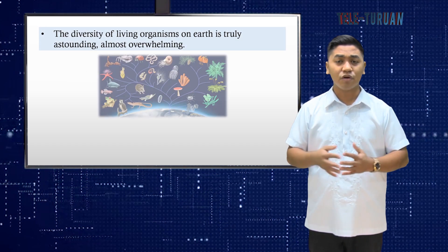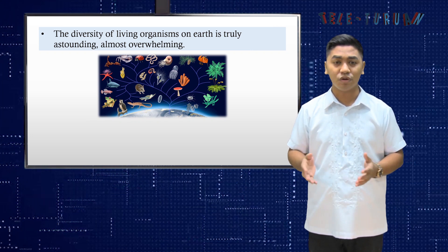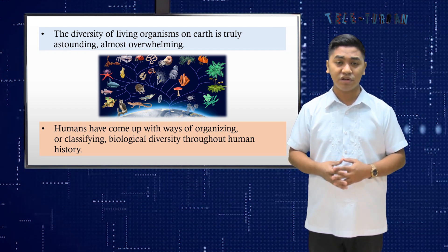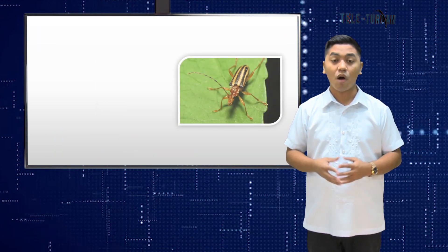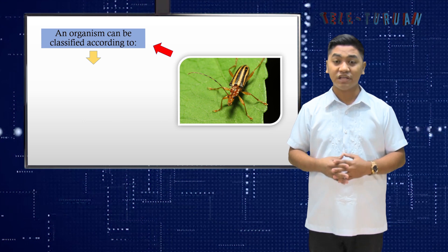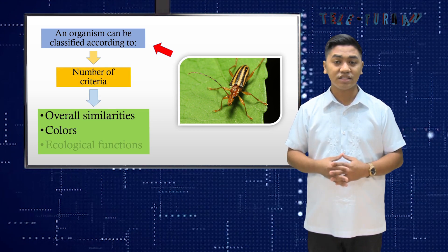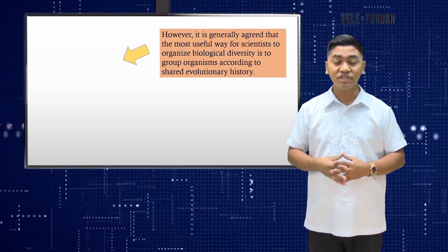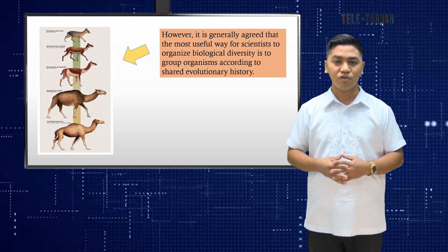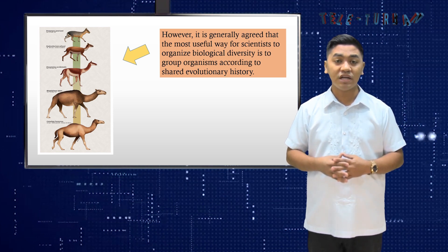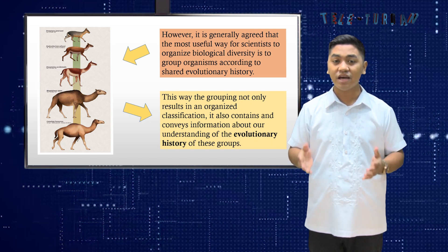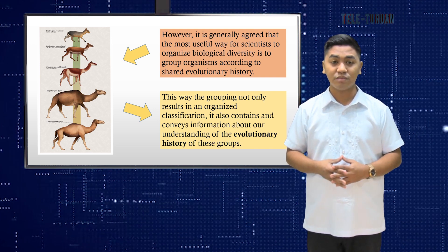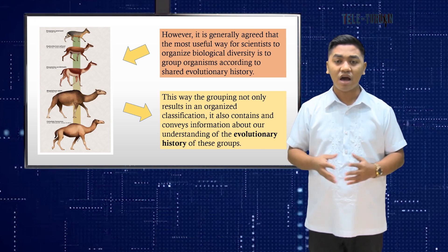The diversity of living organisms on Earth is truly astounding, almost overwhelming. Humans have come up with ways of organizing or classifying biological diversity throughout human history. Organisms can be classified according to any number of criteria, including overall similarities, colors, ecological functions, and so on. However, it is generally agreed that the most useful way for scientists to organize biological diversity is to group organisms according to shared evolutionary history. This way, the grouping not only results in an organized classification, it also contains and conveys information about our understanding of the evolutionary history of these groups.